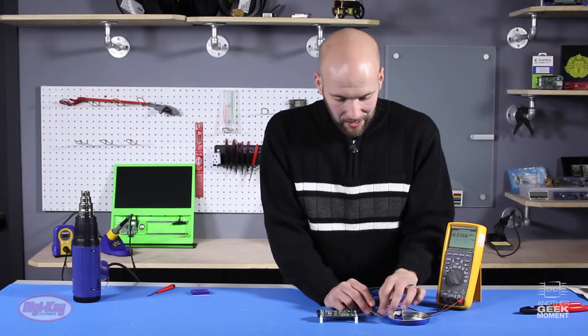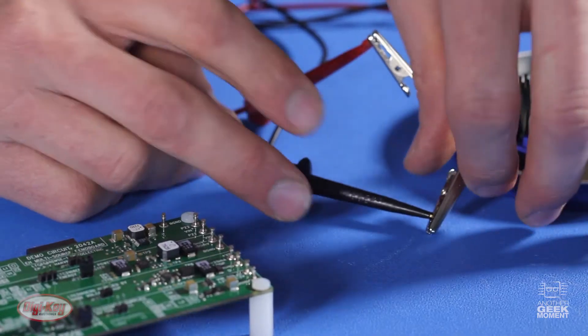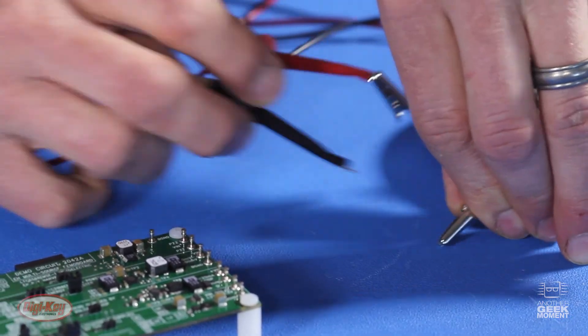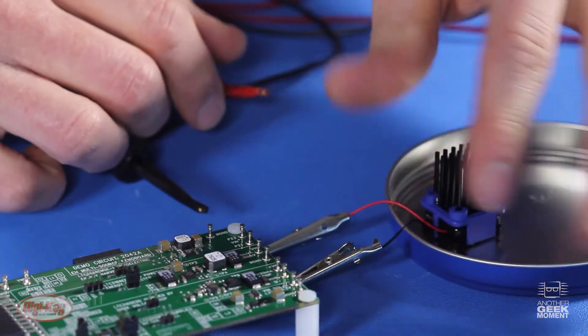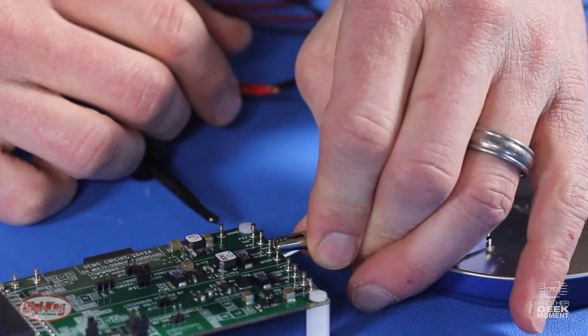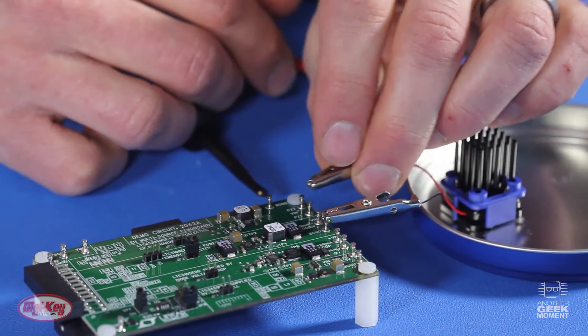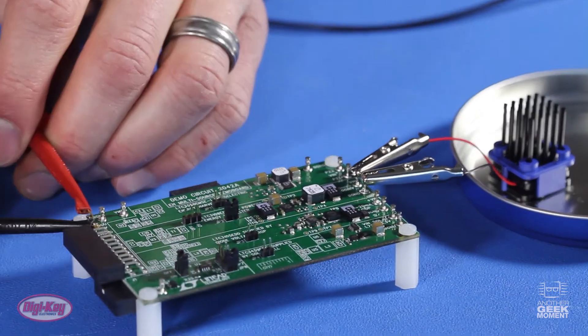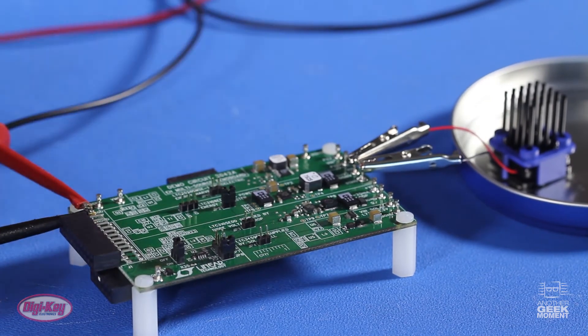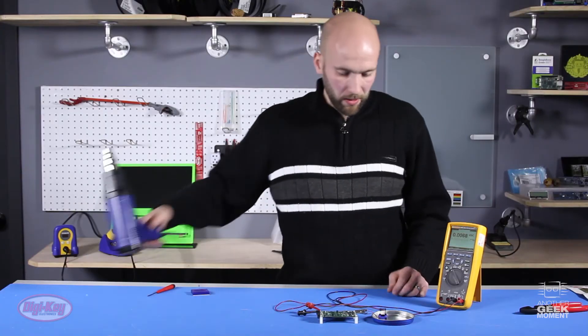Now that we've seen the voltage output on the module itself we can hook it up to the board and we can take a look at the voltage output once it's been regulated. The positive and negative are swapped on the module itself. That's a little bit inconvenient. Nothing too bad. All right and then we're gonna have to heat up the module again.